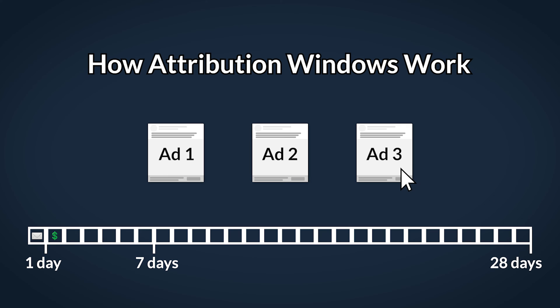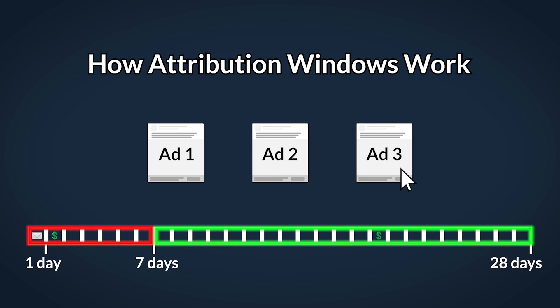To demonstrate the 28 day attribution window: if they clicked on the ad, came back after 20 days, and completed a purchase, that would fall under a 28 day click attribution window because they converted within 28 days — but they did not convert within seven days or one day, which means it would not fall under a seven day or a one day click attribution window.